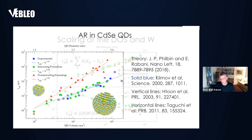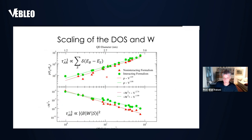We can understand where the non-interacting formalism fails. It turns out that if we look at how the density of states in the Auger calculation scales, whether interacting or not, it scales roughly with volume as expected. However, the non-interacting approach overestimates the scaling of the Coulomb coupling between the initial and final state. The Bethe-Salpeter approach provides the smoothing that gives the correct inverse-V-squared scaling of the coupling, consistent with stationary phase analysis.